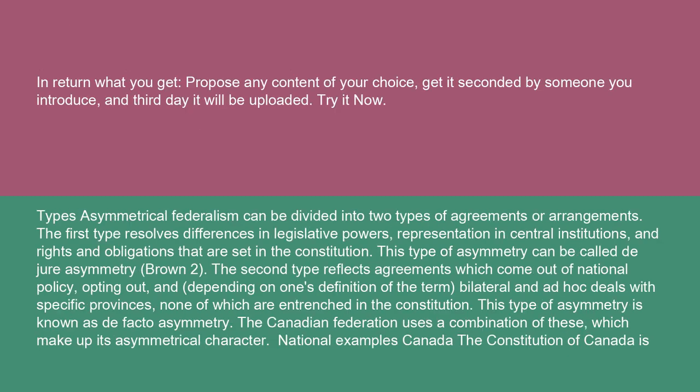Asymmetrical federalism can be divided into two types of arrangements. The first type resolves differences in legislative powers, representation in central institutions, and rights and obligations that are set in the constitution. This type of asymmetry can be called de jure asymmetry.